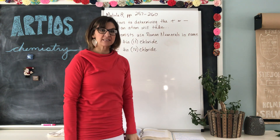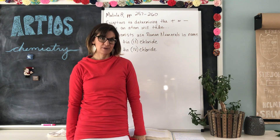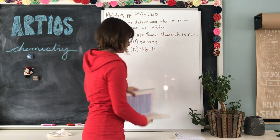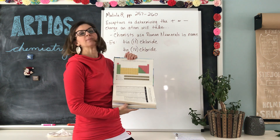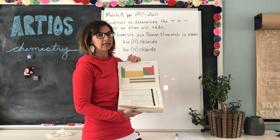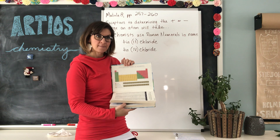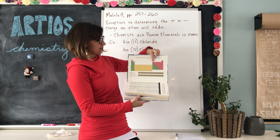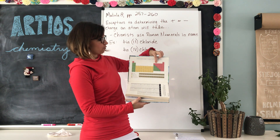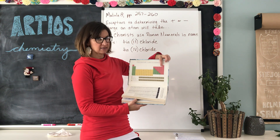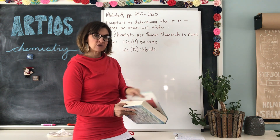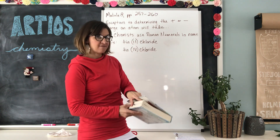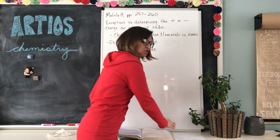It's pages 257 through 260 in your chemistry textbook. Last video in 8a we were talking about how we could use the periodic table to determine what charge — positive or negative — an atom would take if it gained or lost electrons: 1+, 2+, 3+, then it switches to 4-, 3-, 2-, 1-. However, there are some exceptions in groups 3a, 4a, and 5a, and we're going to talk about those exceptions first.